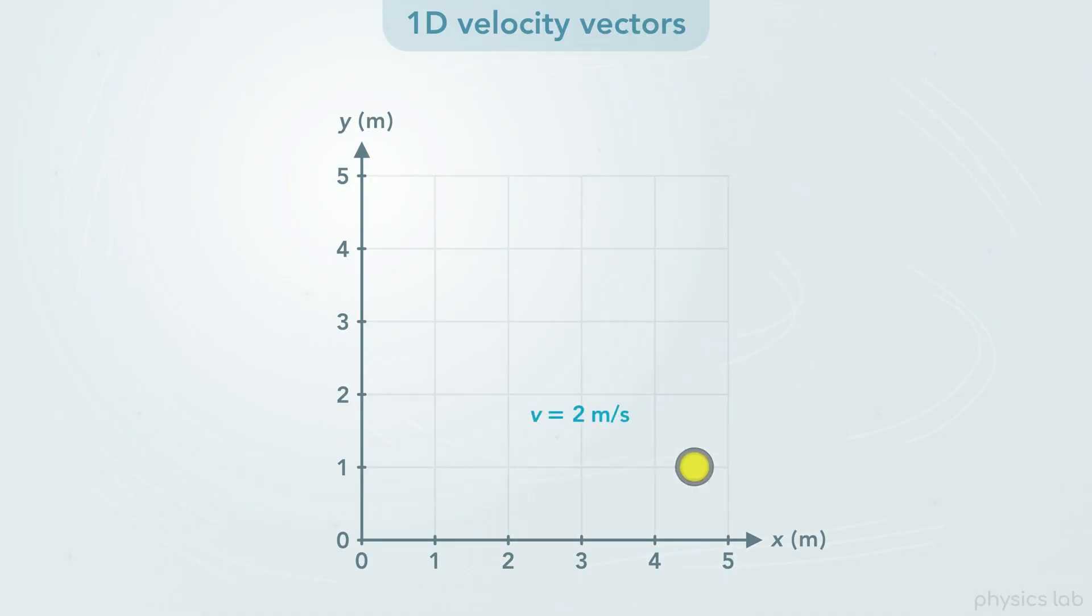Let's say this stone moves to the right at 2 meters per second. What would its velocity vector look like? Let's focus on the initial point when the stone is here. This is the velocity vector at this time.